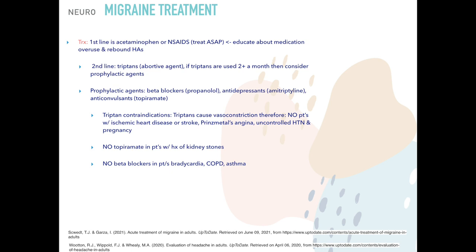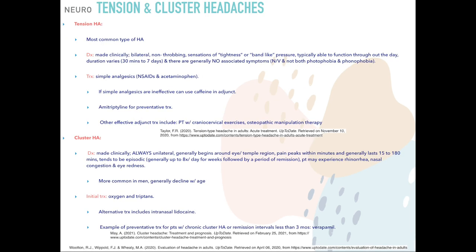Important contraindications: triptans cause vasoconstriction and are contraindicated in patients with ischemic heart disease, stroke, Prinzmetal angina, uncontrolled hypertension, and pregnancy. Topiramate is contraindicated with a history of kidney stones. Beta blockers cannot be used in patients with bradycardia, COPD, or asthma, as they can cause bronchospasm.